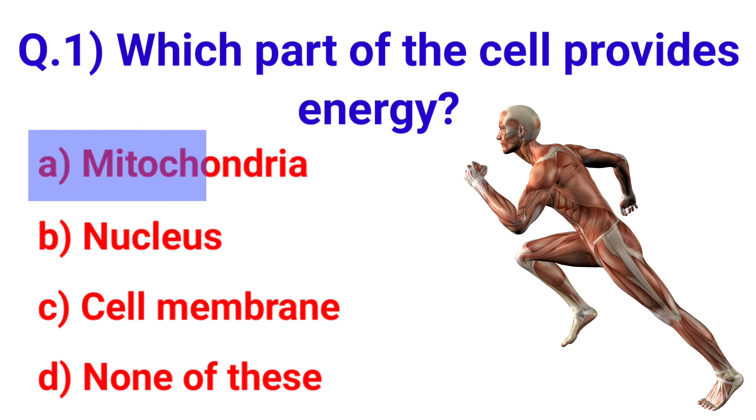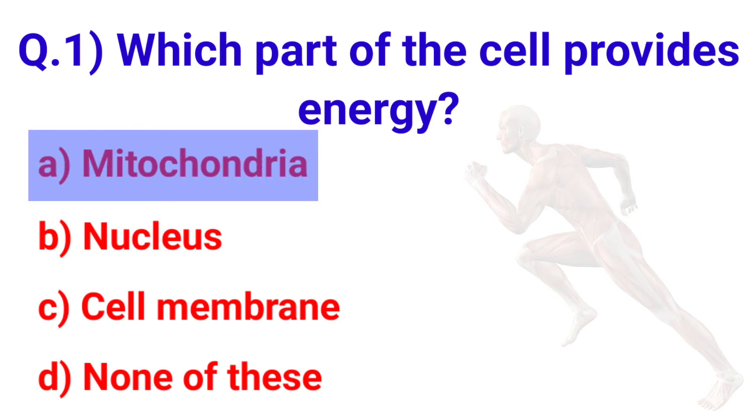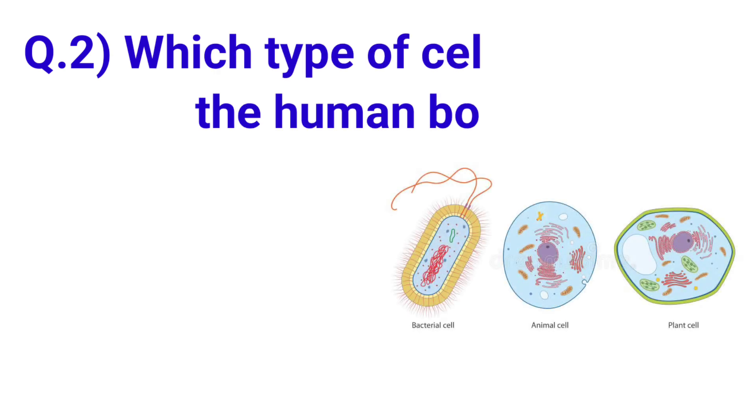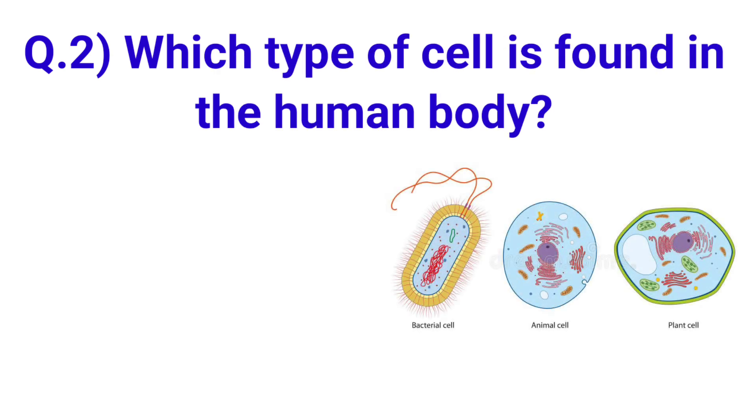Answer is option A. Mitochondria. Next question: Which type of cell is found in the human body?